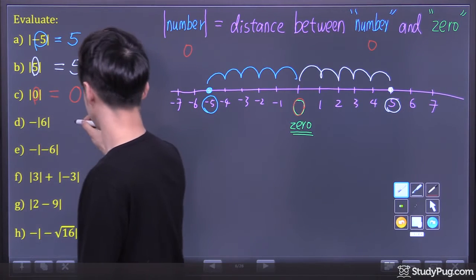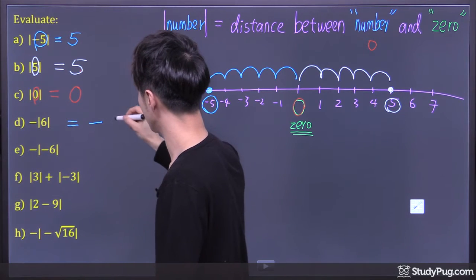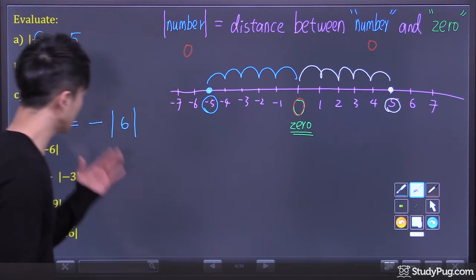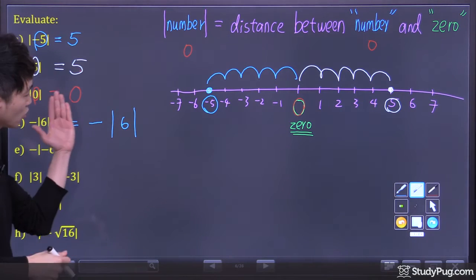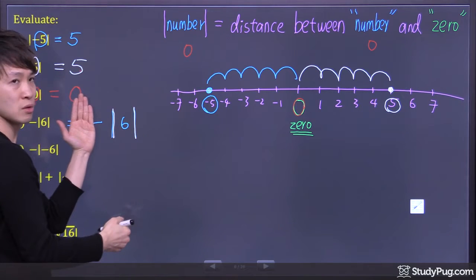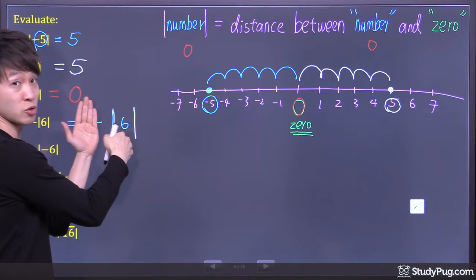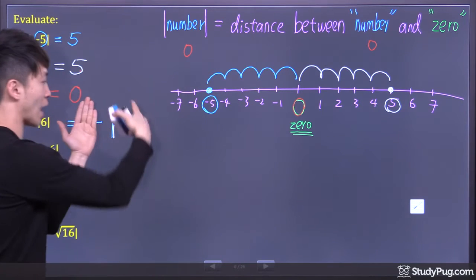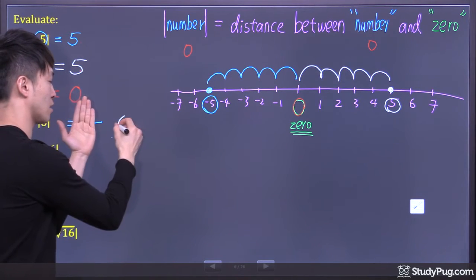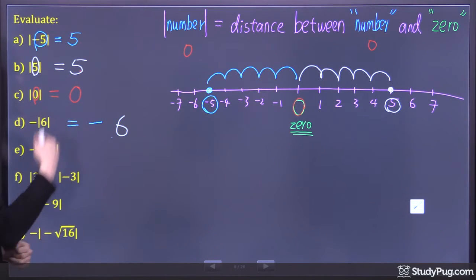Question D: we have negative absolute value of 6. Don't look at the negative sign for now — just focus on the absolute value. Absolute value of a positive number 6 is just itself, so absolute value of 6 is just 6. Now, in front of it we have a negative sign. So the final answer is negative 6.